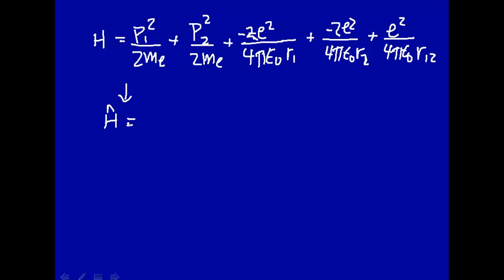So let's write this as minus ℏ² over 2 times the mass of the electron, times del squared. This is, we introduced this when we talked about the hydrogen atom.